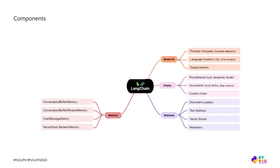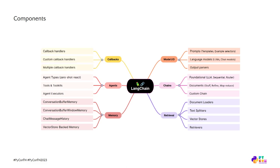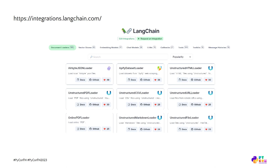We have model memory that helps preserve application state between calls in a chain. We have a group called agents — these are special components with a cutting-edge concept: using the LLM as a reasoning engine, letting it decide what tools to use, and carrying out more complex sequences of actions. Finally, we have callbacks, which are very useful for logging and streaming intermediate steps of any chain. There are over 600 components in LangChain so far.